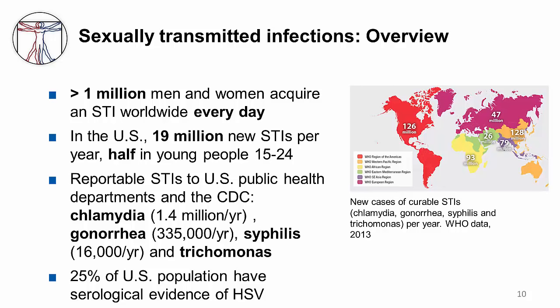Although not reportable, there is a high population prevalence of HSV, with 25% of the U.S. population having serologic evidence of infection. The map on the slide shows the burden of curable STIs worldwide. Most STIs are in the Americas and in Asia.